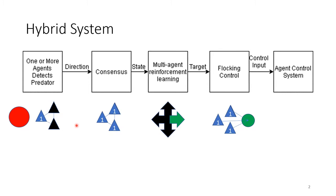The hybrid system consists of these main components. First, one or more agents detect a predator. As you can see, this agent detects it, then it feeds that direction into the consensus algorithm so that all agents agree on the same direction.